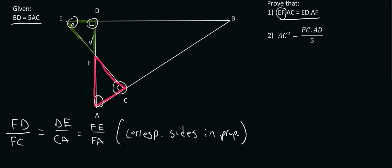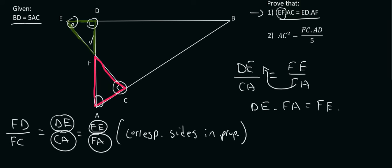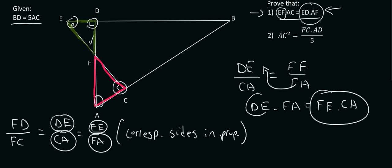So for question one we're looking for EF — there it is. We're looking for AC — there it is. ED — there we go. And AF or FA — there we go. So we've got everything we need. Then we just do cross multiplication, so we end up with DE going with FA and FE going with CA. It doesn't have to look exactly like they have it, as long as EF is with AC and ED is with AF. So that's question one complete.